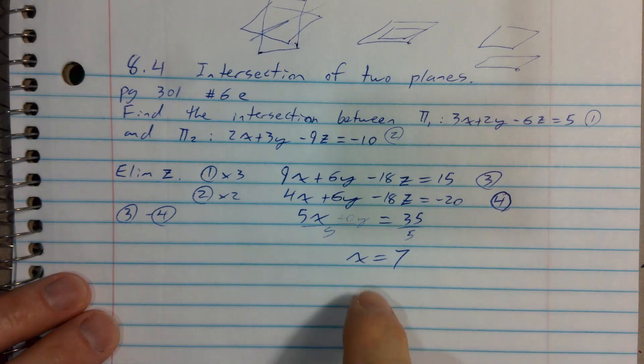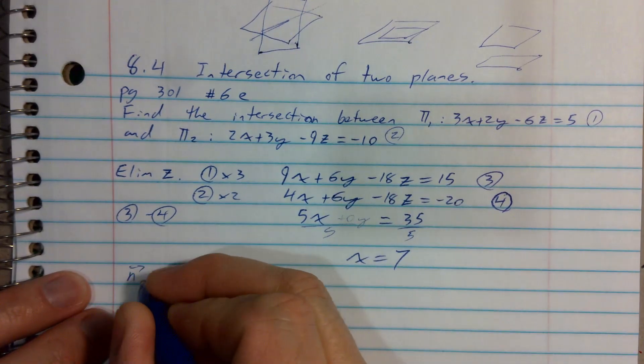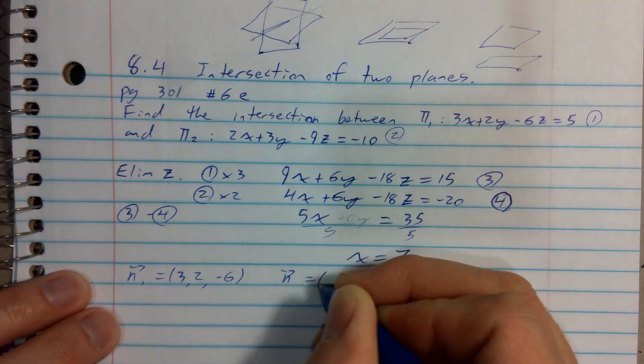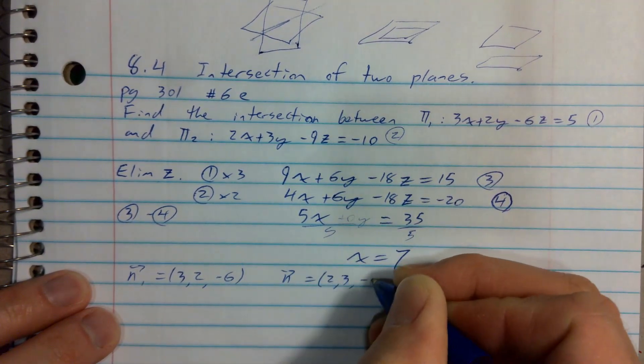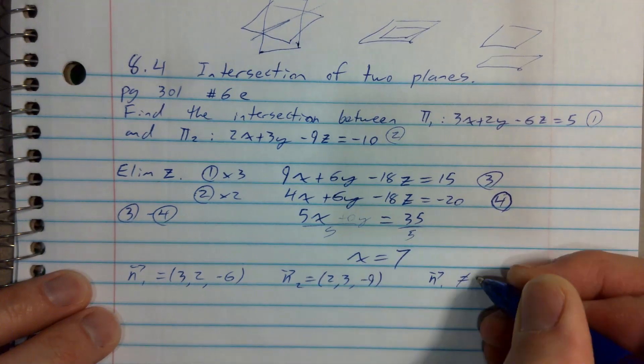So this is where I might want to go back and verify things. Normal 1 is 3, 2, negative 6. Normal 2 is 2, 3, negative 9. Normal 1 is definitely not a scalar multiple of normal 2. We can observe this.